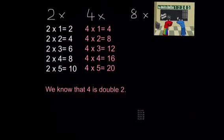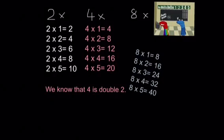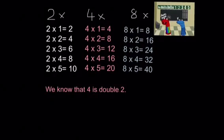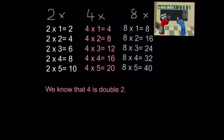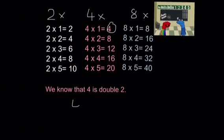Now if we know the 4 times tables, that means we can also work out the 8 times tables, because 8 is double 4. So if you look at 4 times 1 equals 4, then 8 times 1 is double that answer. So what is 4 add 4? Which gives us 8.